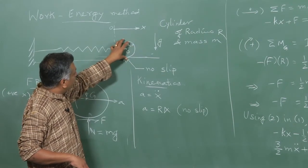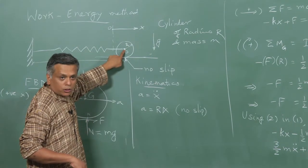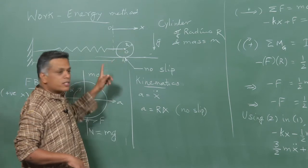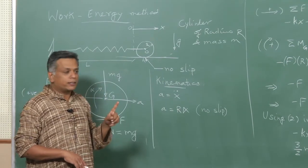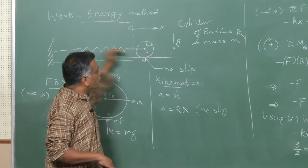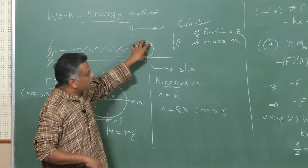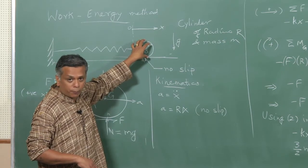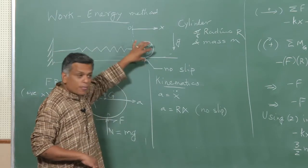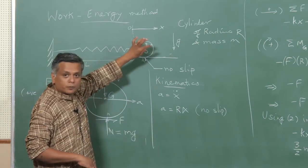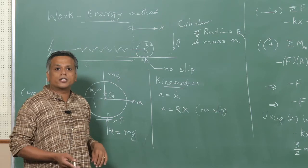When this object was just a rigid body sliding on a frictionless plane I had m x double dot plus kx equals zero, whereas now I have this additional factor of three-halves, which has come because this cylinder has a rotation along with its translation. The previous example of the block on a frictionless plane had a single degree of freedom for kinetic energy, whereas this cylinder of radius R and mass m has two degrees of freedom to store kinetic energy — it can translate and it can rotate.